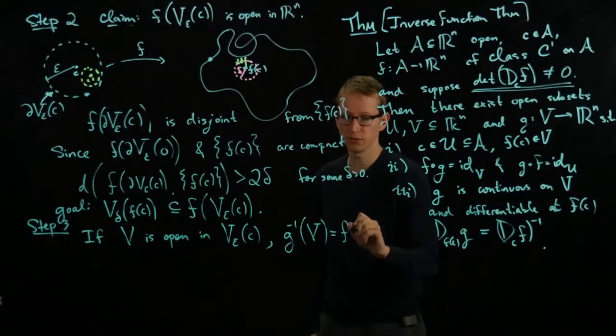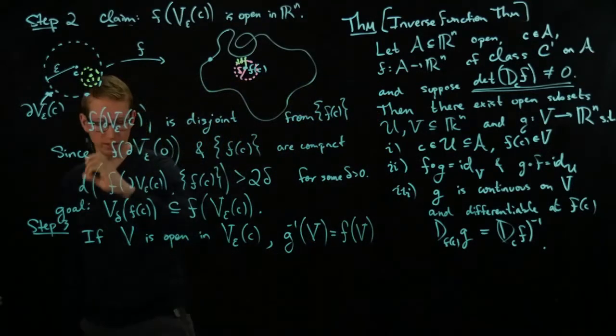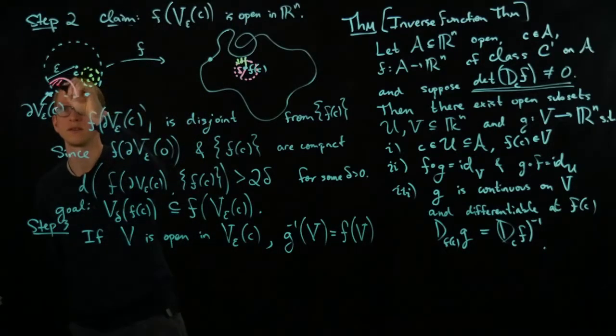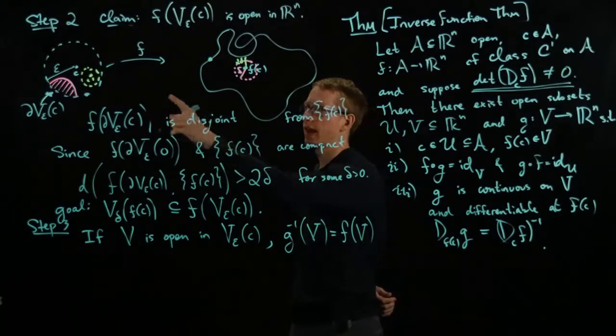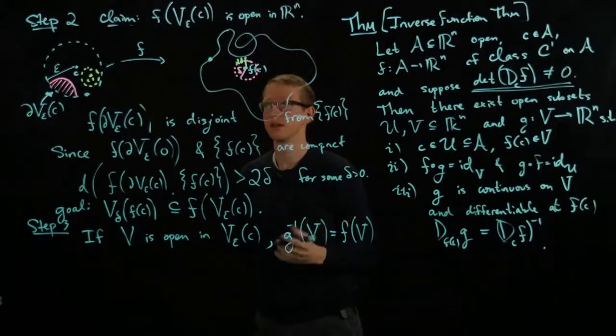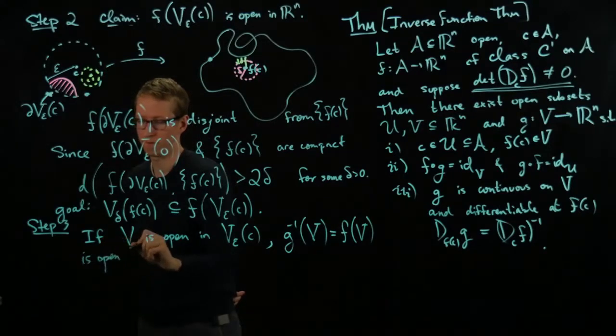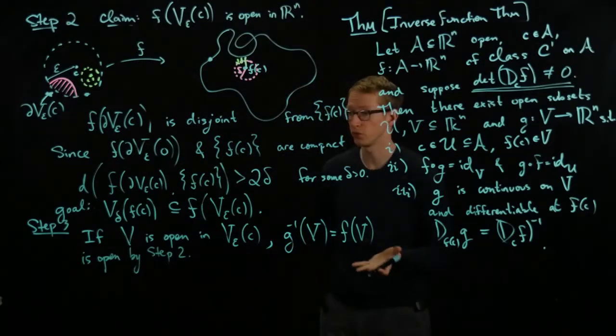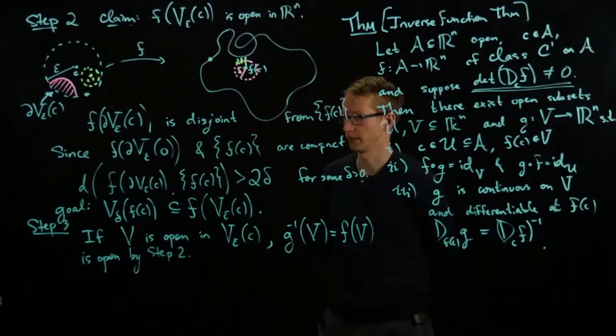Now this, because F is 1 to 1, is equal to F of V. And remember, V is an open set somewhere in here, so maybe it looks something like, maybe it looks something like this. And from step two, and from step two, since F is 1 to 1, and the image of this is open, the same is true of any open subset. So this means that F of V is open by step two. And that actually concludes step three, because we've shown that for any open set in this domain, the inverse image is open in this domain, in R^n.